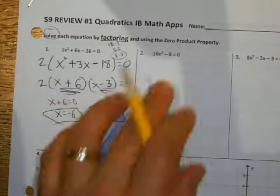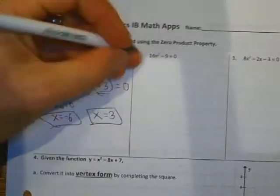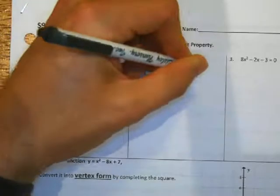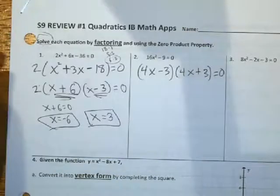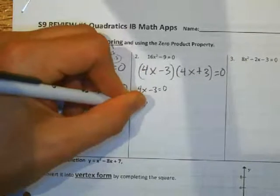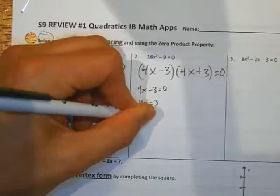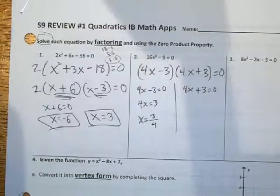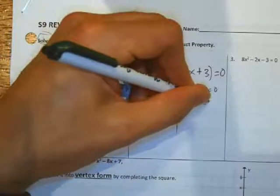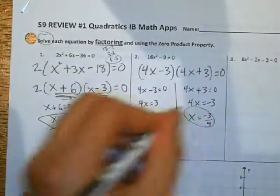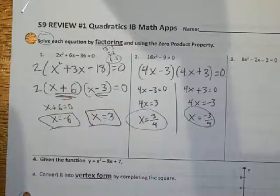So this is factoring using the difference of squares method. I've got 16x squared minus 9, so that's going to be 4x minus 3 times 4x plus 3, and that equals 0. So I could say 4x minus 3 equals 0, giving 4x equals 3 and x equals 3 fourths. And then 4x plus 3 equals 0 gives 4x equals negative 3 and x equals negative 3 fourths. So if I plug those values in, we would have 0 on the left side of the equation.